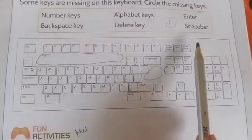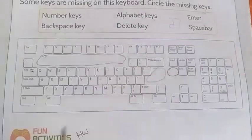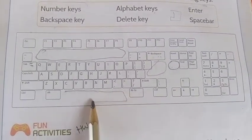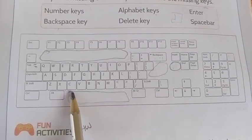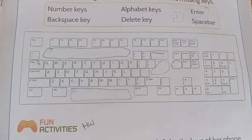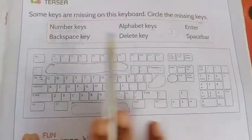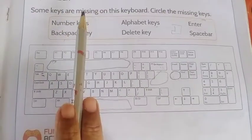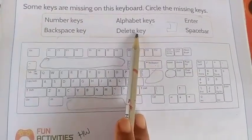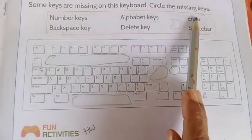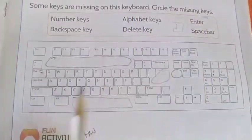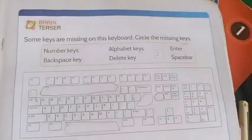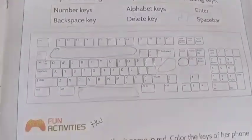Next is space bar. This is the place of space bar — it is not there, circle it. So, how many are missing? One is number key, another one is delete key, enter key, and space bar are not there. This you have to do now.